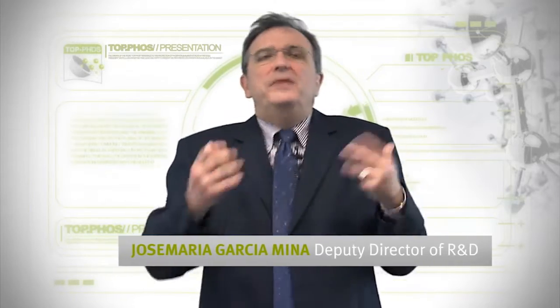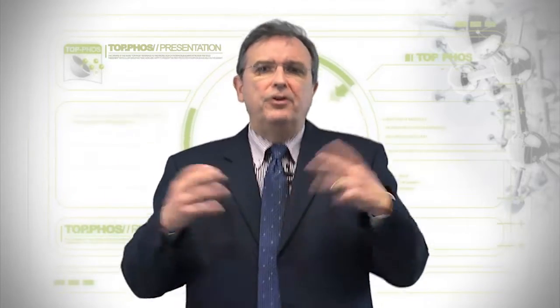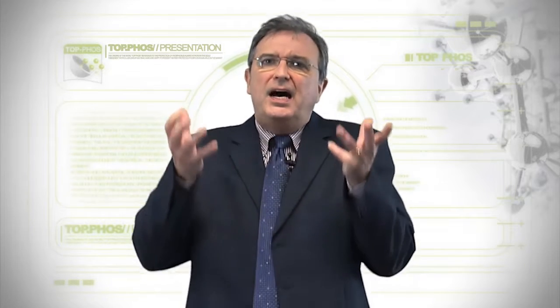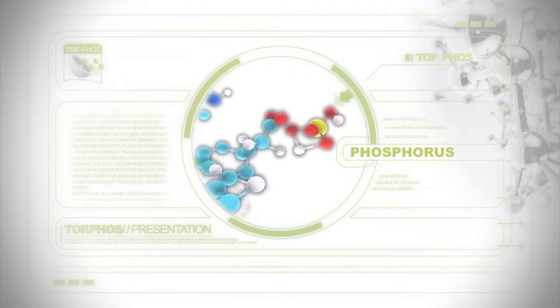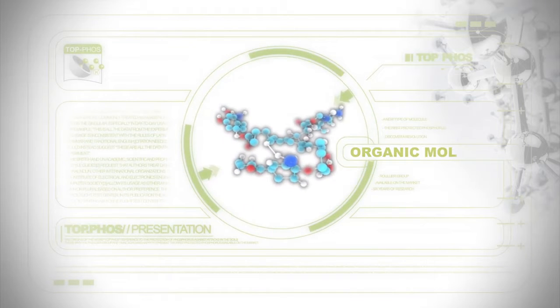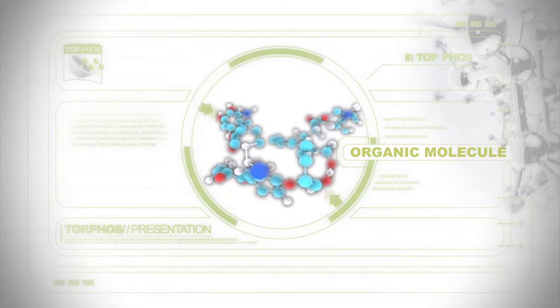Topphos is a new molecule containing phosphate. It is not a phosphate mixed with a molecule in order to increase the activity of phosphate. It is, principally, a new molecule where we have phosphate complexed by the binding site of the organic molecule through calcium bridges.